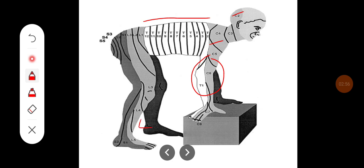L1, L2, L3, L4, and L5 supply the anterior part of the lower limb, whereas S1, S2, S3, S4, and S5 supply the posterior part of the lower limb and the perineal region.